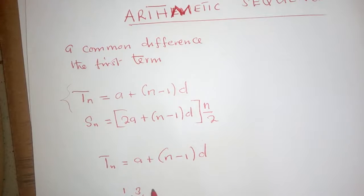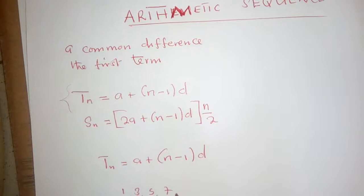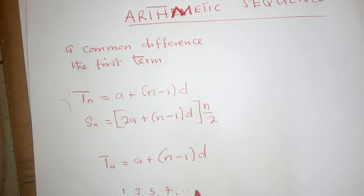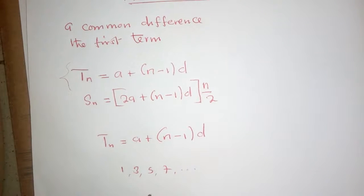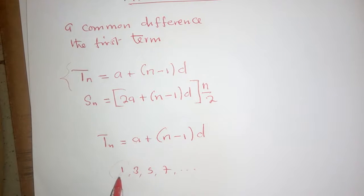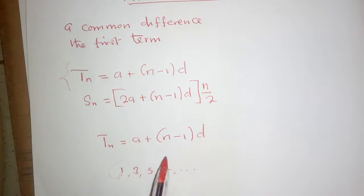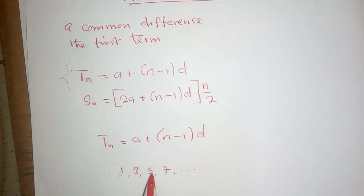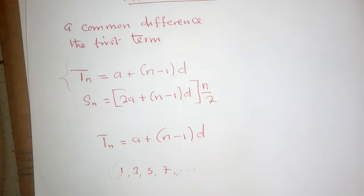In this formula, 'a' means the first term — the term at the beginning of the sequence. If you have a sequence like 3, 5, 7, …, then 'a' equals 3. 'n' is the position of the term you want — if they ask for the 5th term, you put n equals 5. 'd' is the common difference.